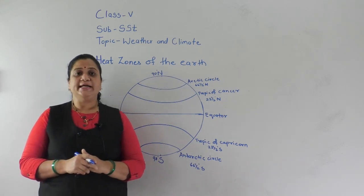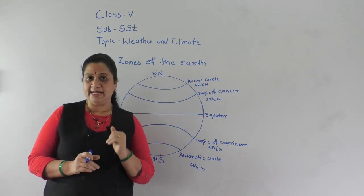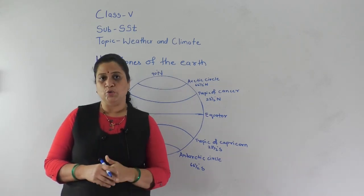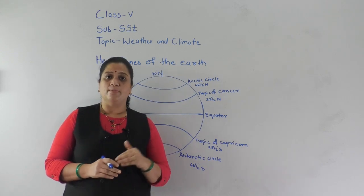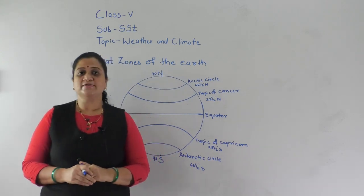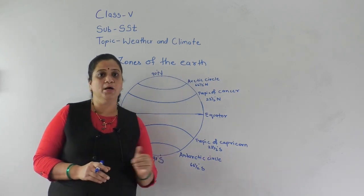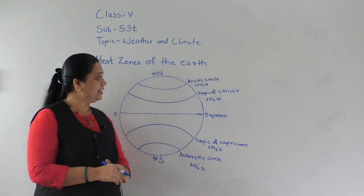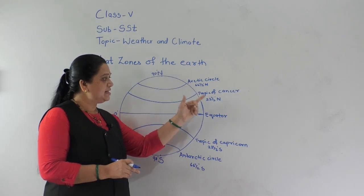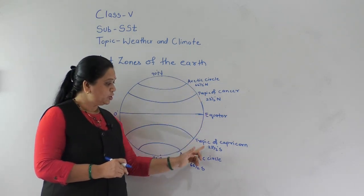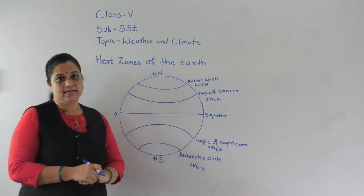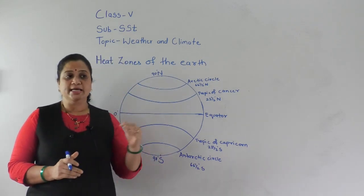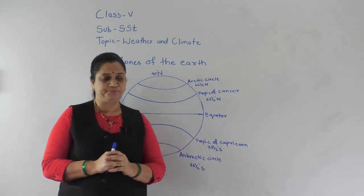Based on the intensity of the heat, our Earth is divided into three different zones. We have already studied about latitude and the five important latitudes: Arctic Circle, Tropic of Cancer, Equator, Tropic of Capricorn, and Antarctic Circle. Now let us see how our Earth is divided into these three heat zones.